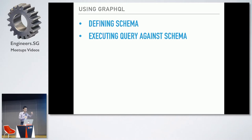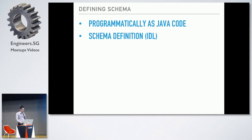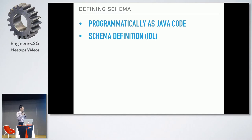Now I'm going to explain how to use GraphQL — basically two steps. First, we define the schema; second, we execute the query against the schema. There are two ways to define the schema using GraphQL Java. We can do it programmatically using Java code — more verbose but more flexible. The second way is using a schema definition, called IDL (Interface Definition Language) — this is easier, cleaner, and the recommended way. The first one is more powerful because you can use Java to dynamically create the schema at runtime, but for general purposes the schema definition is simpler.